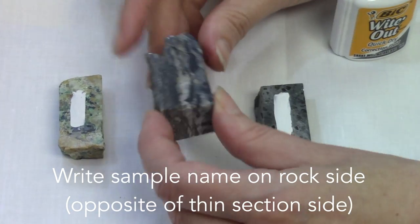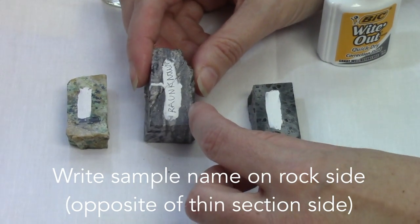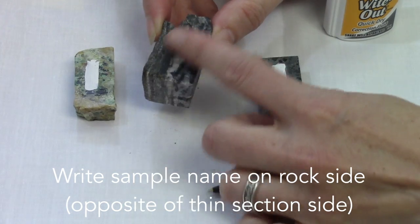It is always really useful to label the thin sections like this on the side that's opposite the side you want to make the thin section.